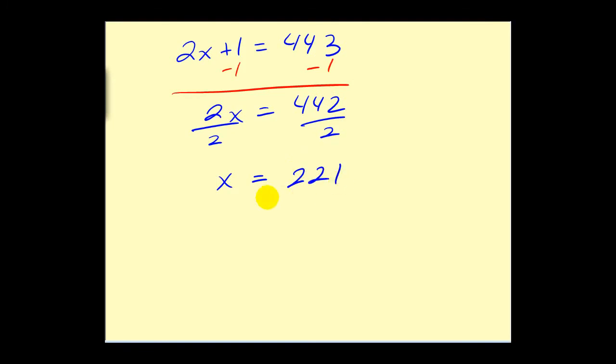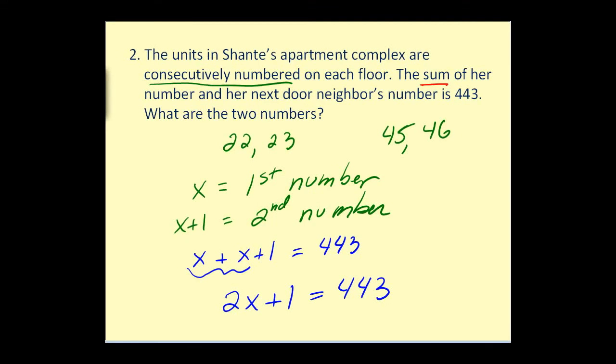We have x is equal to 221. Now be careful. Let's go back and read the question again. What are the numbers? So we found x, so we found the first number. But the second number was x plus one.